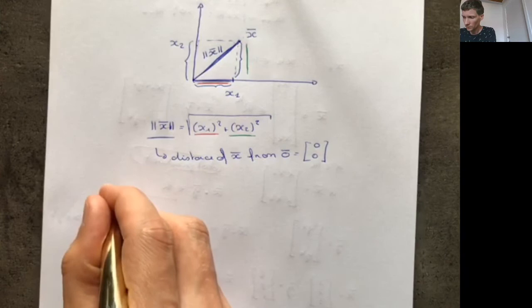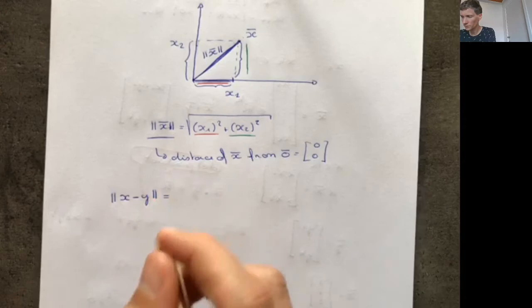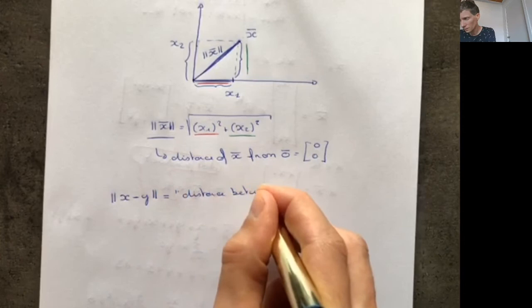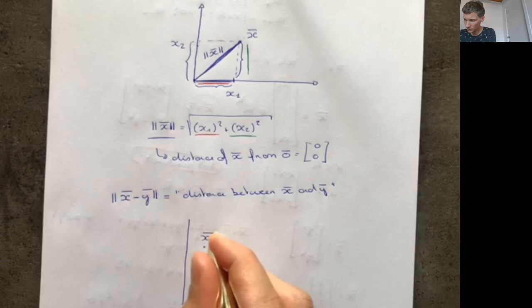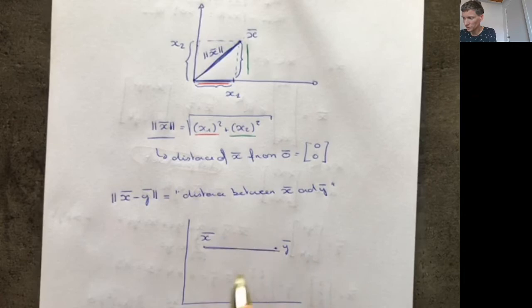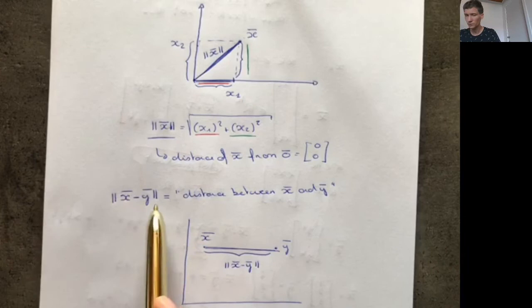More generally, if you have two vectors x and y, the norm of the difference ||x − y|| equals the distance between x and y. If you put x at one point and y at another, the length of the line segment between them equals the norm of x − y. So the norm measures distances in Euclidean space — if you want the distance between two vectors, take the difference and take the norm.